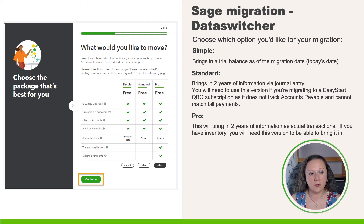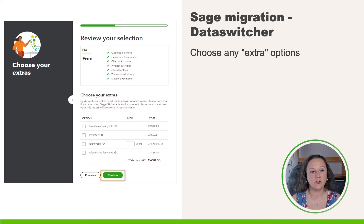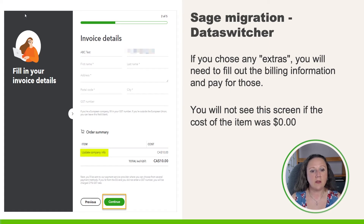When you select the button under this screen you can choose any extra options. You will note that most of these do have an additional cost. Inventory is free, but here is where you could select any extra years you need to bring in and you can also choose to bring in classes and locations. Once you have ticked the boxes of the services you wish, click the Confirm button. If you don't want to bring any of those items in, you don't need to check any boxes. If you chose any extras that require payment you will be taken to an invoice detail screen where you fill out the invoice information as well as credit card details. It will itemize the items you are purchasing and the total cost including sales tax. Once you've finished that, hit Continue.